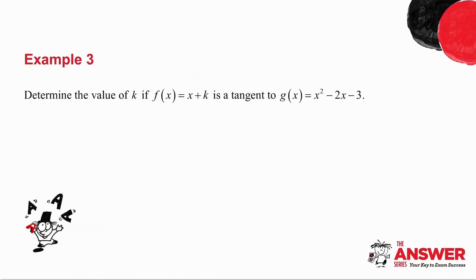Example number 3 says to you determine the value of k if f(x) is a tangent to g(x). Now there are two ways to do this: you can either use nature of roots or you can use calculus. What I want you to do is pause the video, try this in both ways, and then we'll look at the two different ways together.